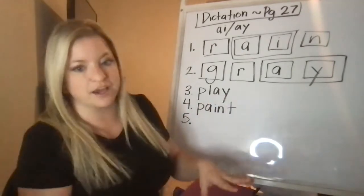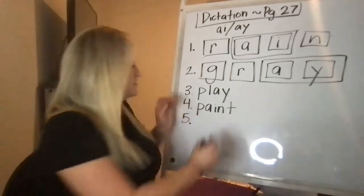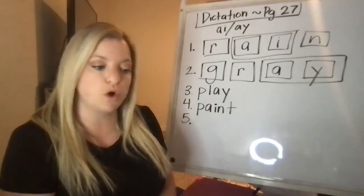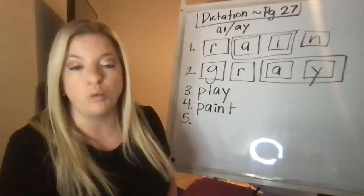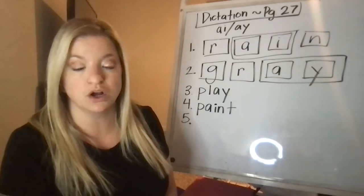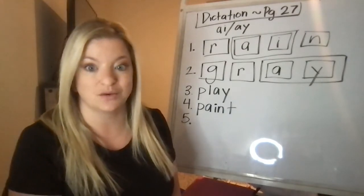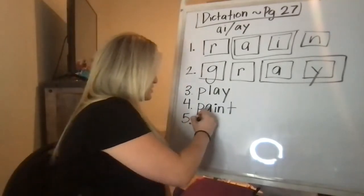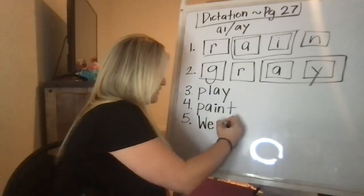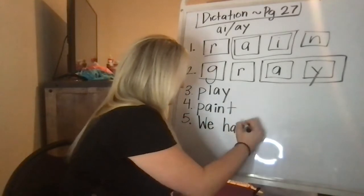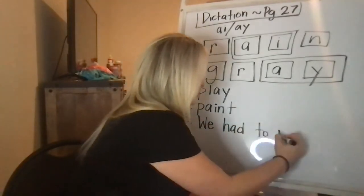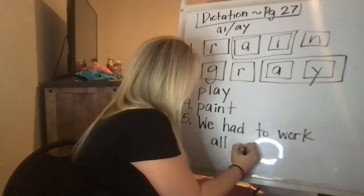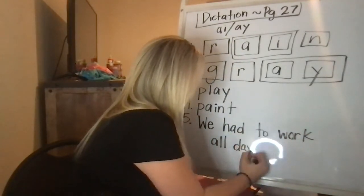Now we're going to write our sentence, okay? Remember your five-star writing always. It is: we had to work all day. We had to work all day. So capital W, W-E, had to work all day, right?